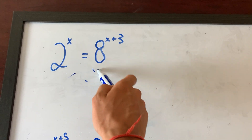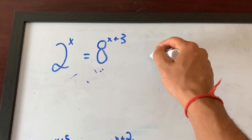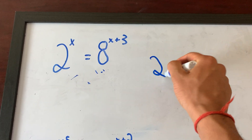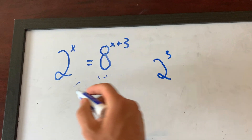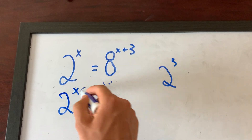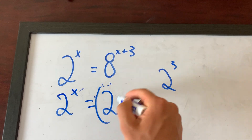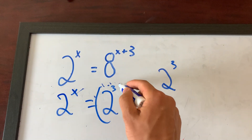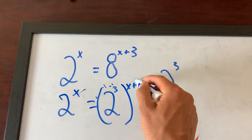Look at eight — how can you rewrite eight? You can rewrite it as two cubed. So let's rewrite this equation as two to the x is equal to two cubed, all raised to the power of x plus three.